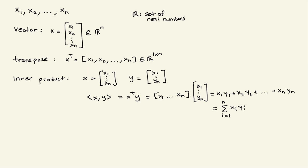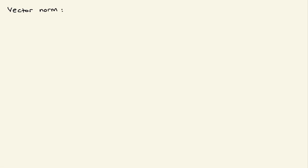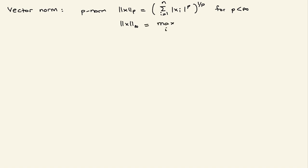Now I would like to talk about vector norms. In general, we define the p-norm of a vector as ||x||_p, which is the sum from i=1 to n of |xi|^p, raised to the power of 1/p. This is for p less than infinity. We also have the infinity norm, which is the maximum over i of the absolute value of each element. This is for p equals infinity. So you can have a 1-norm, 2-norm, 3-norm, up to the infinity norm.